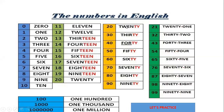From twenty onwards we make combinations — twenty one, twenty two, twenty three, twenty four, twenty five, twenty six, twenty seven, twenty eight, twenty nine, and then thirty, and so on. That's why in the green we've put them that way. ¿Cómo decimos cien? One hundred. ¿Cómo decimos mil? One thousand. ¿Cómo decimos un millón? One million.